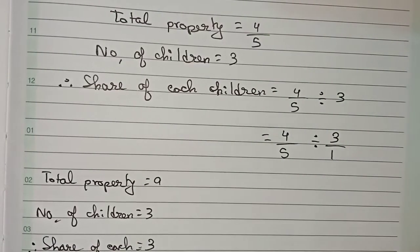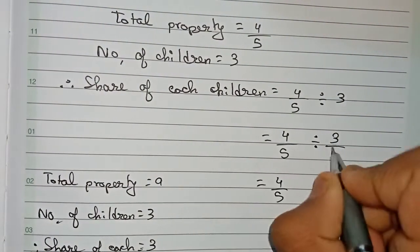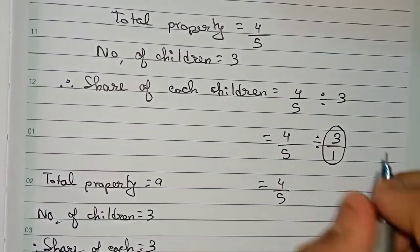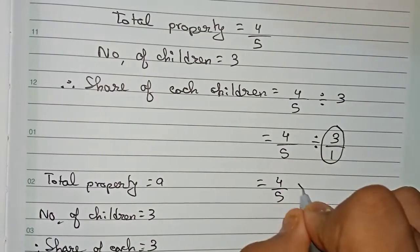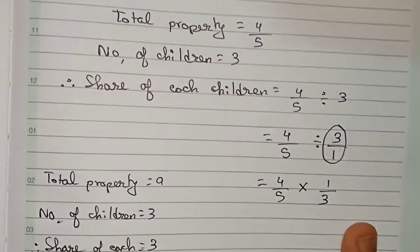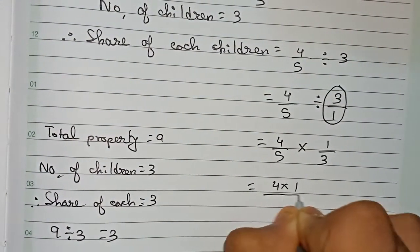Now we can easily find the reciprocal. If you find the reciprocal of this number, 1 will go up and 3 will come down, so it will become 4/5 multiplied by 1/3. We cannot cut it, so we directly write as 4 times 1 by 5 times 3.